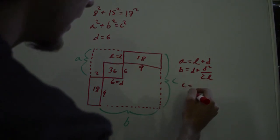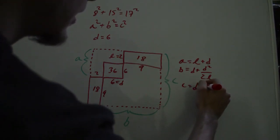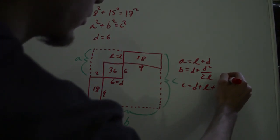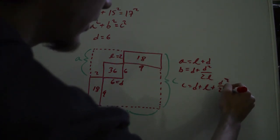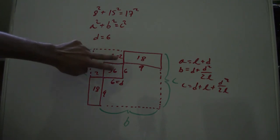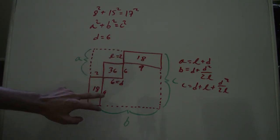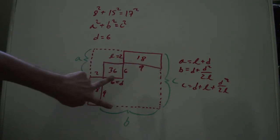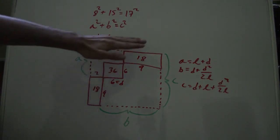And then for c, it's just all of them added up. So d plus l plus d squared divided by 2l. And graphically, it's l, there's d, and then there's the same exact length we found before, d squared divided by 2l right there. And that gives you all of c.